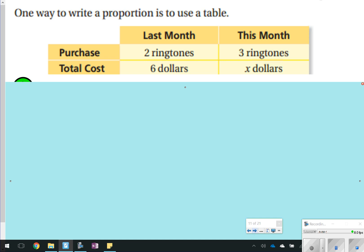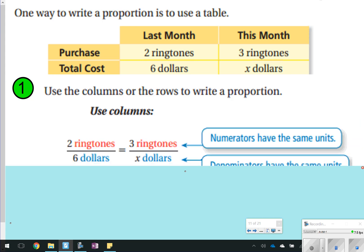One of the ways you can write a proportion is seeing it in a table. This one is actually set up perfectly. Last month you purchased two ringtones for $6, so this month you're purchasing three ringtones for X dollars. Whenever you're writing them as a proportion, you want to make sure that you keep the rates the same. So if you start with two ringtones on top and $6 on the bottom, you'll have three ringtones on the top over here and X dollars on the bottom here.